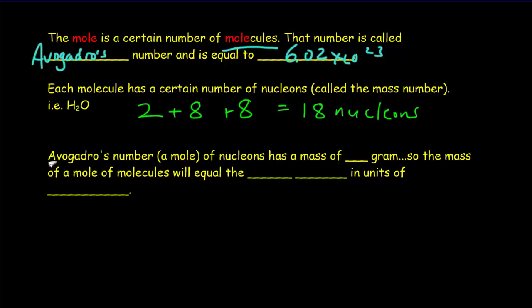And we were saying before that if you've got Avogadro's number, that is a mole of nucleons, that has a mass of one gram. So, the mass, if you've got a whole mole of molecules, will equal the mass number, but we'd write it in units of grams.